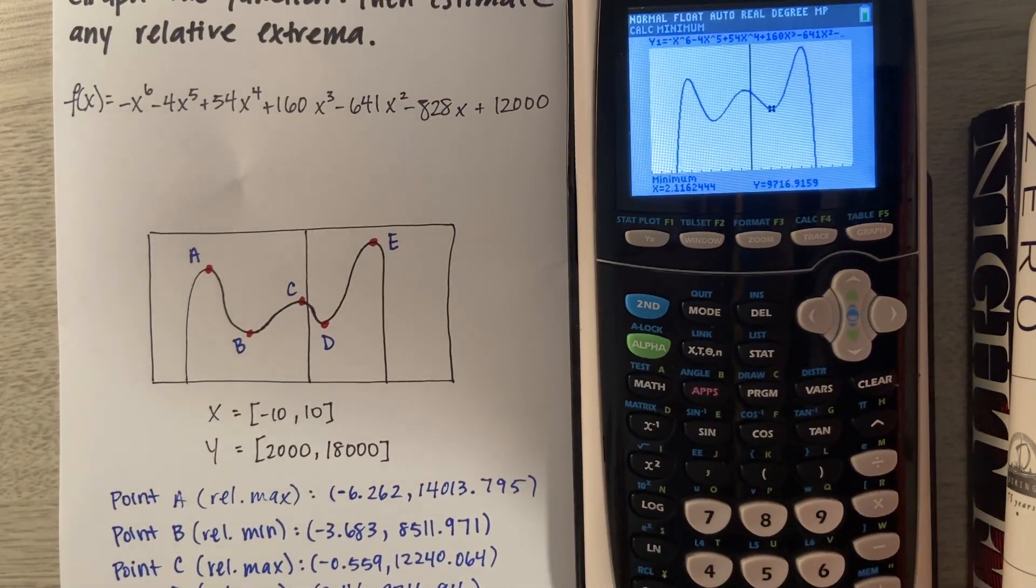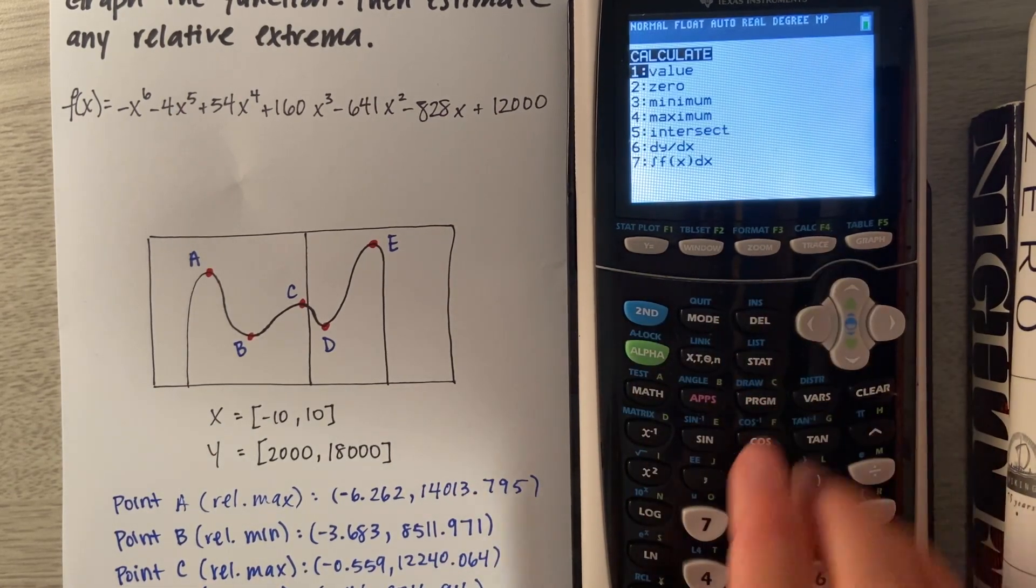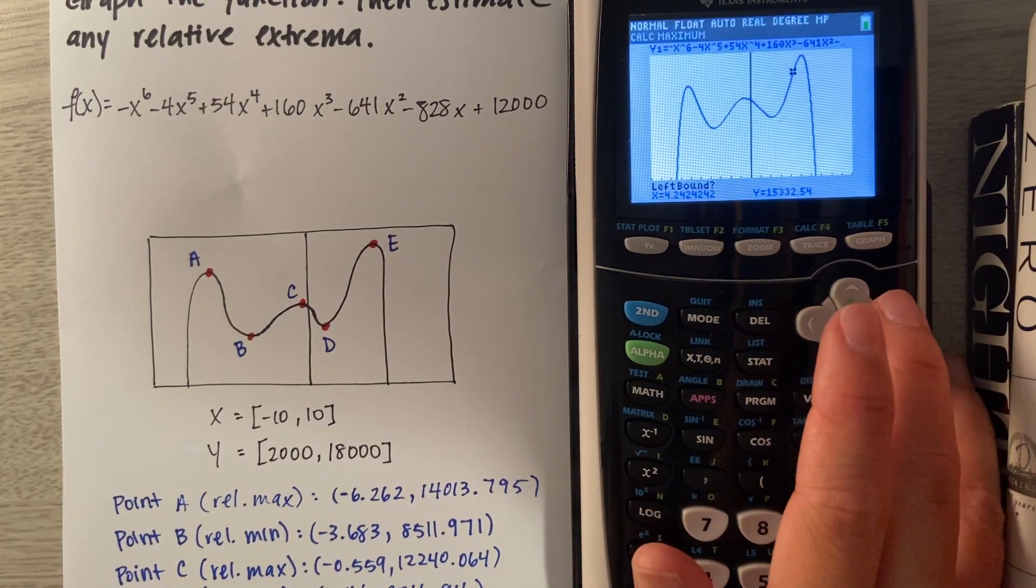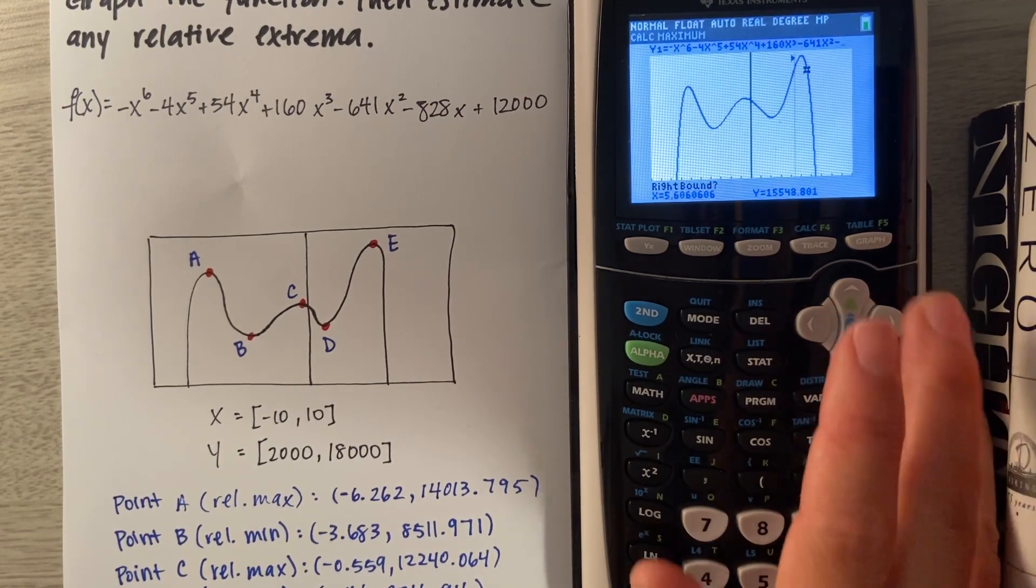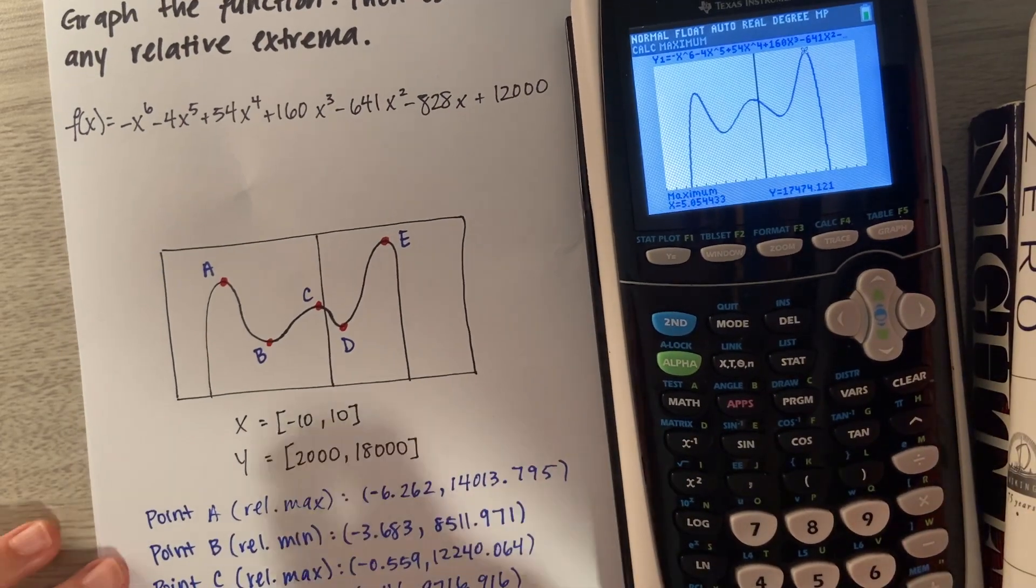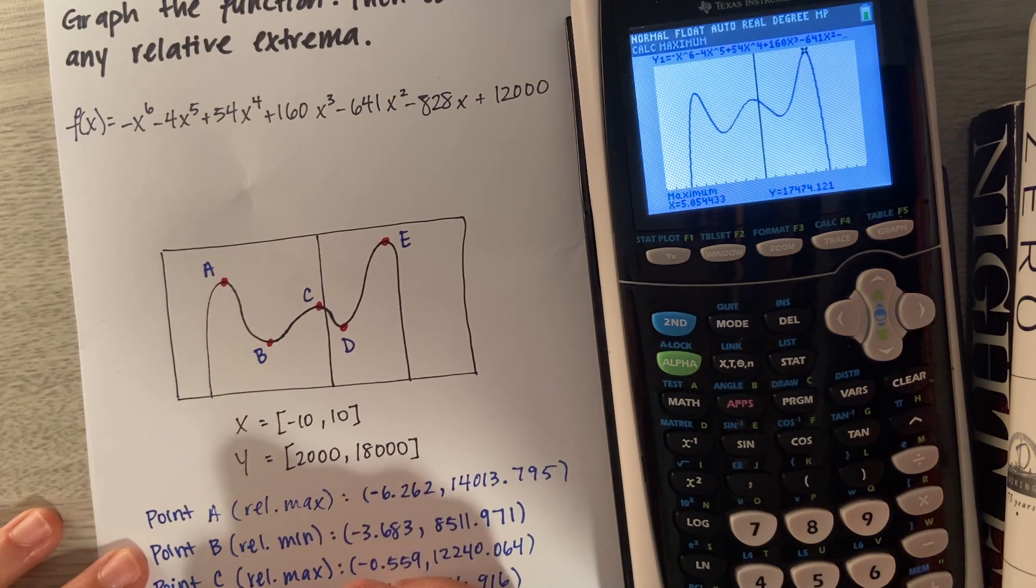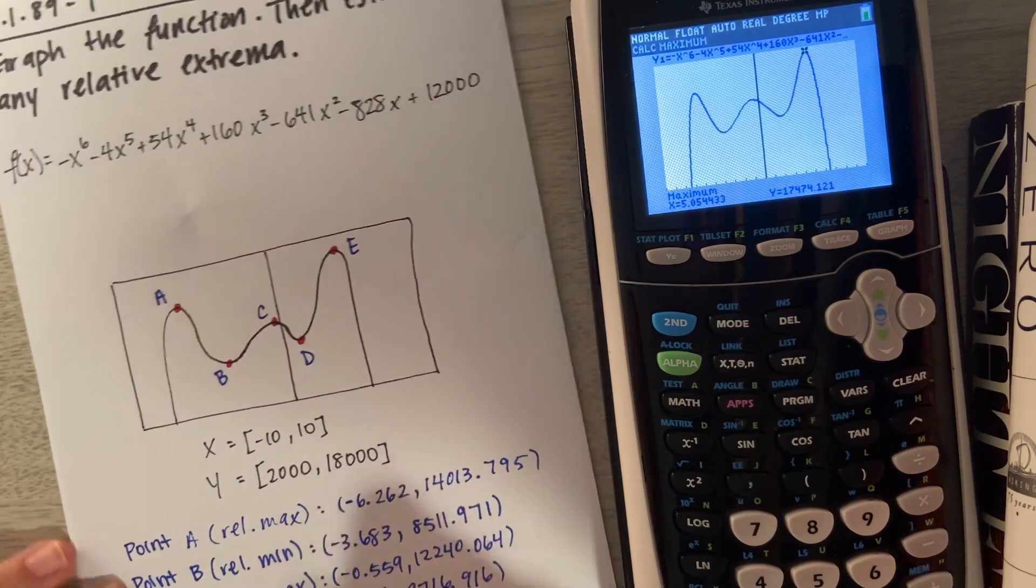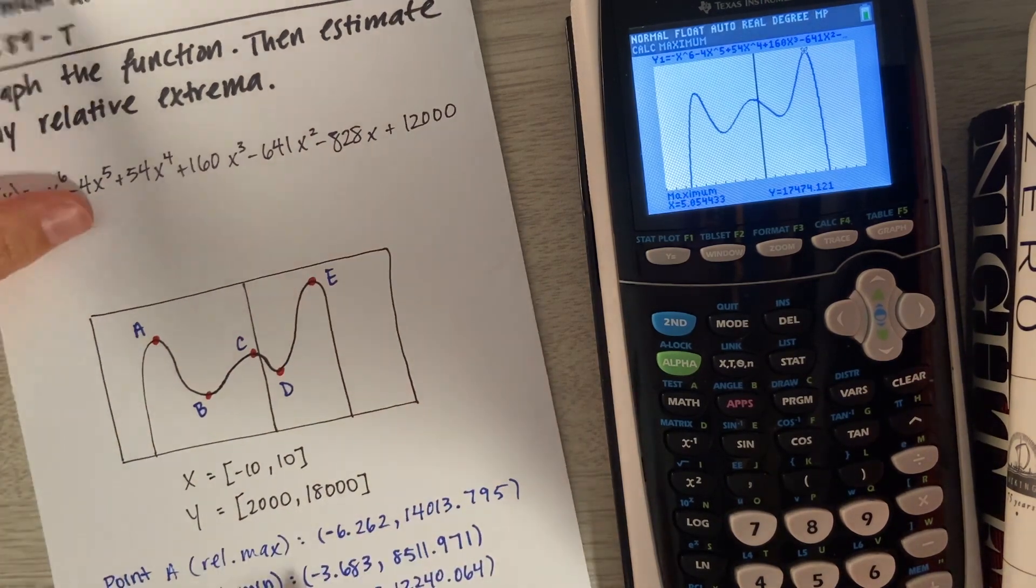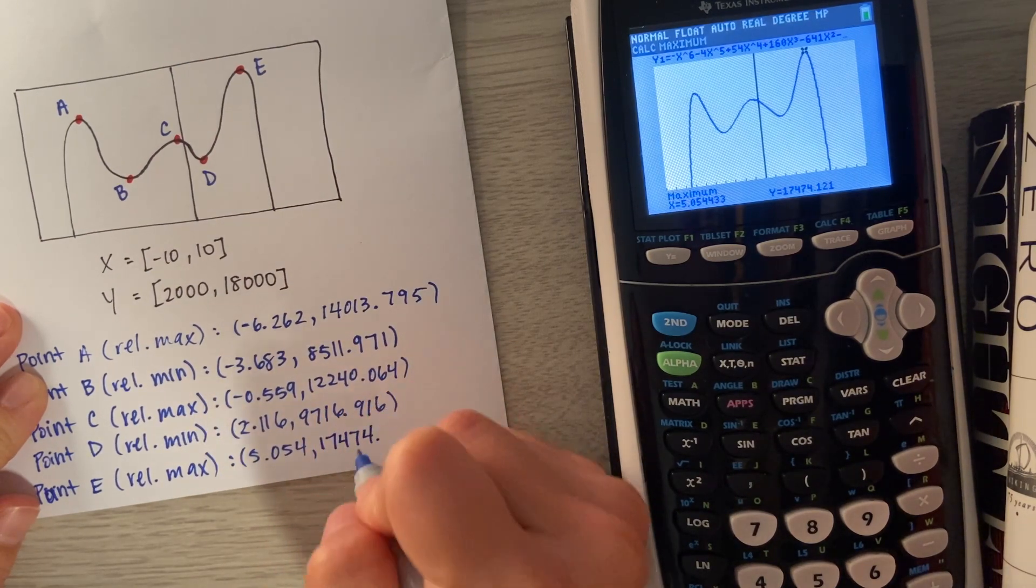Now we're left with our last relative max. Once again, Second, Calc. We're going to go to Maximum. Then we're going to do our left bound, right bound, and then a guess. Point E is a relative max. We have 5.054, 17,474.121.